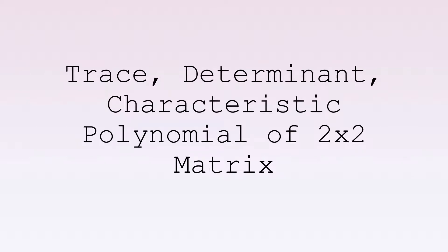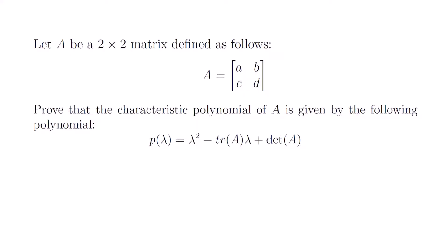In this video, we will discuss the relationship between the trace, the determinant, and the characteristic polynomial of a 2x2 matrix. Let A be a 2x2 matrix with the entries A, B, C, D. Prove that the characteristic polynomial of A is given by P of lambda equals lambda squared minus the trace of A times lambda plus the determinant of A.